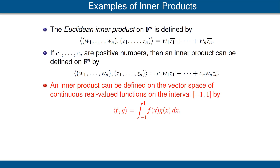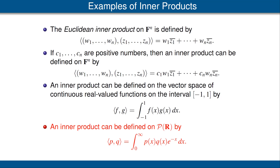For our next example, consider the real vector space consisting of the continuous real-valued functions on the interval from minus 1 to 1, and define the inner product of two functions f and g to be their integral. You should pause the video for a moment to verify that this definition satisfies all four required properties for an inner product. For our final example, we'll look at the vector space of polynomials with real coefficients. We define the inner product of two such polynomials to be the integral from 0 to infinity of the product of the polynomials times the function e to the negative x. This integral converges because e to the negative x goes to 0 much faster than any two polynomials can grow.